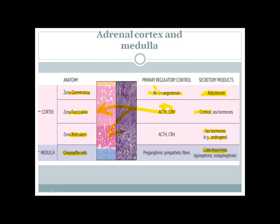The zona glomerulosa and aldosterone secretion is controlled by the renin-angiotensin system. Renin is released from the juxtaglomerular apparatus in the kidney and activates angiotensinogen to angiotensin, which stimulates aldosterone secretion. Chromaffin cell secretion of catecholamines is controlled by preganglionic sympathetic fibers, which secrete acetylcholine as a neurotransmitter. Acetylcholine binds to nicotinic NN receptors on chromaffin cells, stimulating release of epinephrine and norepinephrine into systemic circulation.